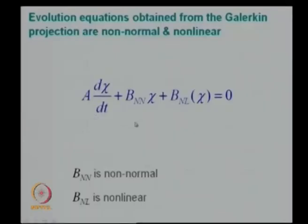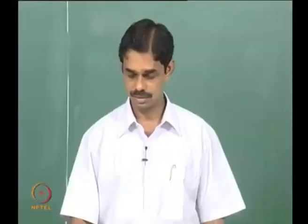The linearized system will have only the first two terms. If there are nonlinearities, you will have a nonlinear function as well. This kind of representation is called state space representation in dynamical systems theory and also in control theory.